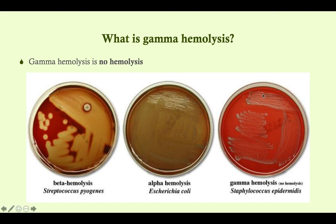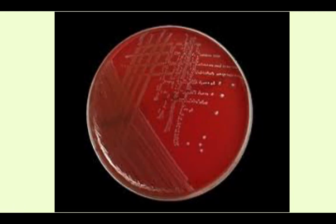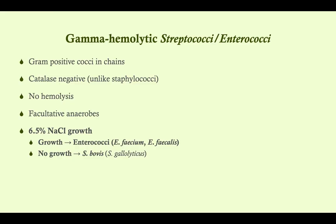Gamma hemolysis means no hemolysis — you just see these colonies growing on the sheep blood agar. Beta hemolysis was complete; alpha hemolysis is partial with a green sheen. This picture illustrates the difference between staph aureus and enterococcus faecalis. Staph aureus is beta hemolytic, so you see a zone of clearing where there's hemolysis. Enterococcus faecalis being gamma hemolytic — you see nothing: no clearing, no green, just colonies growing on the agar. So strep is gram-positive cocci in chains, all catalase negative, gamma hemolytic means no hemolysis, all facultative anaerobes, and you differentiate with sodium chloride growth.